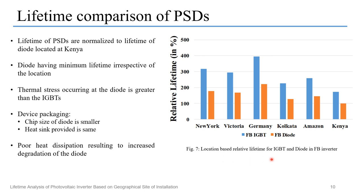Figure 7 shows the location-based relative lifetime for IGBT and diode in the full bridge inverter. The diode is the anti-parallel diode of the IGBT. The lifetimes of the power semiconductor devices are normalized to the lifetime of the diode located at Kenya. We can observe that the diodes have minimum lifetime irrespective of the location. This is because the thermal stress occurring at the diode is greater than at the IGBTs. The reason for this increased thermal stress is that in an IGBT module, the diode chip size is smaller than the IGBT chip size while the heat sink provided is the same, resulting in poor heat dissipation and increased degradation of the diode.